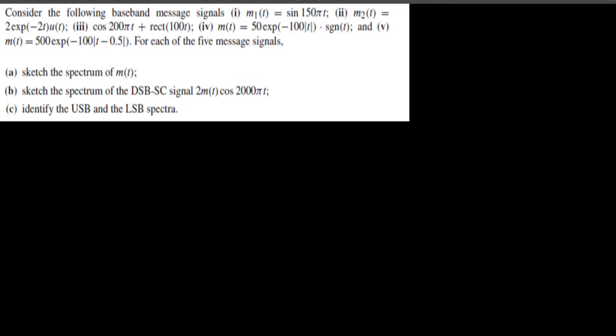Here's a question asking to consider the following baseband message signals. We have five message signals provided. For each of the five signals, we have to sketch the spectrum, sketch the spectrum of the DSB-SC signal, and identify the USB and LSB spectra. I'm going to deal with part three of this because I made a video for part one and part two. In this video I'm going to do part three. If you want to know these things, you can watch my previous video. The other two message signals I'm going to make in my next video.